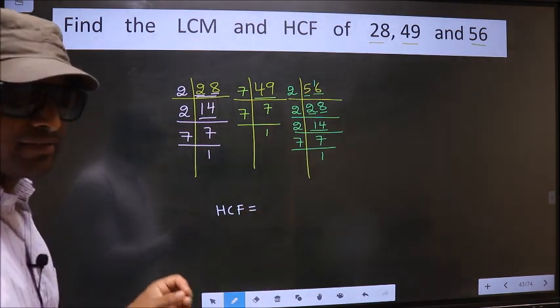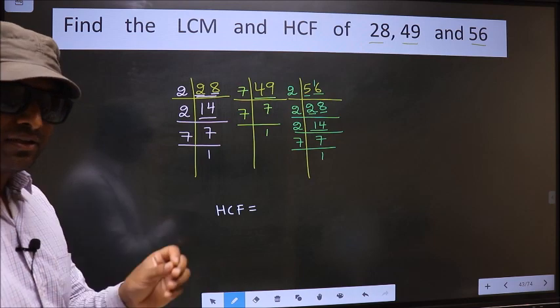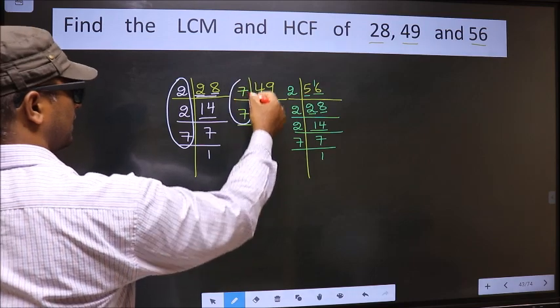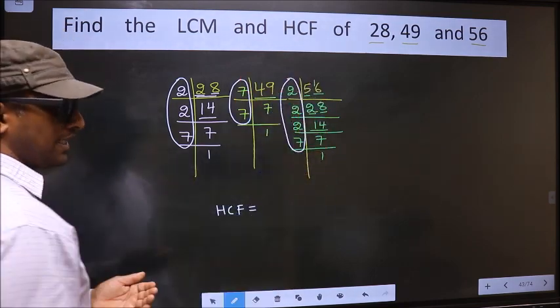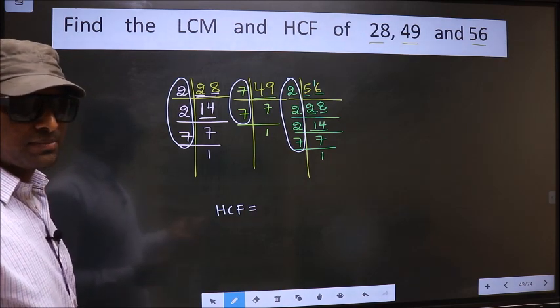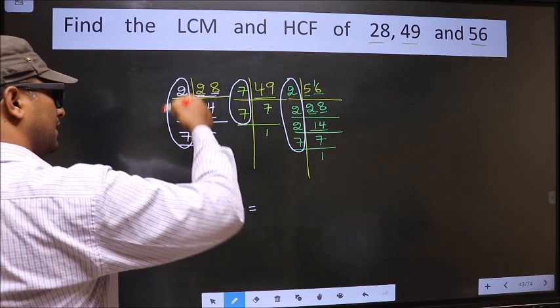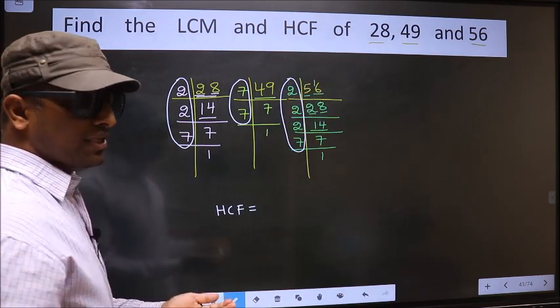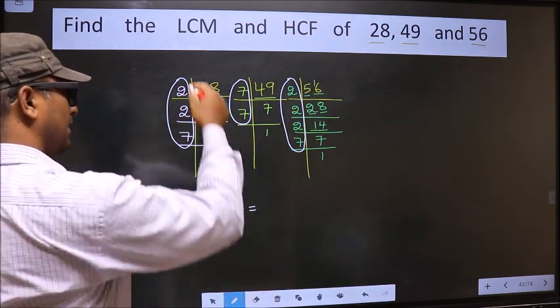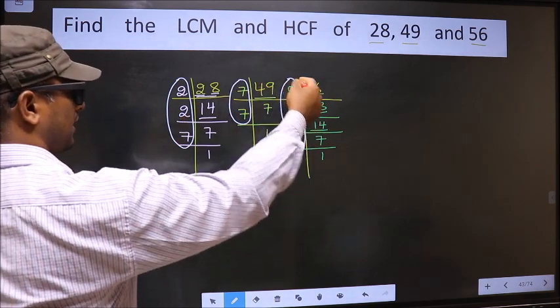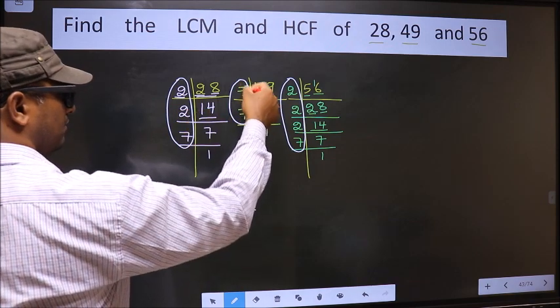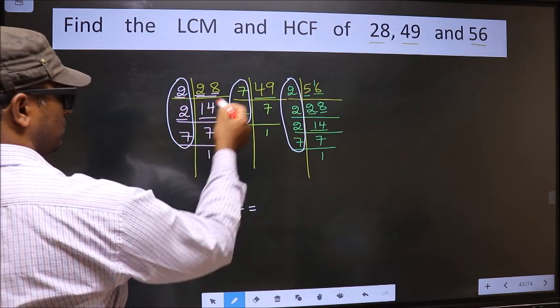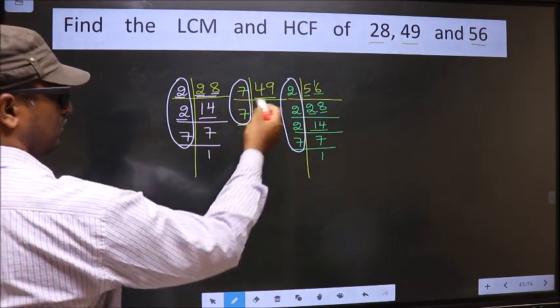Now our HCF is, HCF is the product of numbers which should be present over here and here and also here. I repeat, HCF is the product of numbers which should be present in these 3 places. Here, here and also here. So now let us find the numbers which are present here and here and also here.